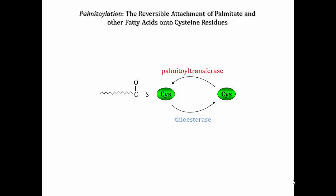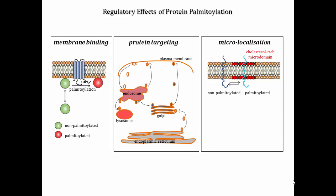Palmitoylation can affect modified proteins in a variety of different ways. Some proteins, including RAS, G-alpha subunits, and Src family kinases, depend upon palmitoylation for stable membrane attachment. Another important function of palmitoylation is to regulate the intracellular trafficking of proteins or to control the association of proteins with cholesterol-rich microdomains such as lipid rafts or caveolae. These latter two effects apply to both soluble proteins and transmembrane proteins.